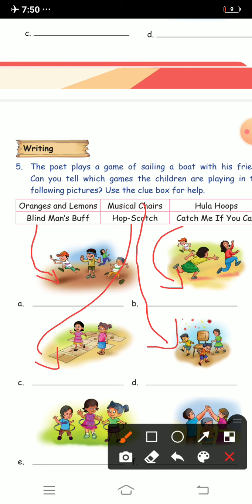Then, you can see the Hula Hoop rings here, right? So, it is Hula Hoops. And the last one is Oranges and Lemons.